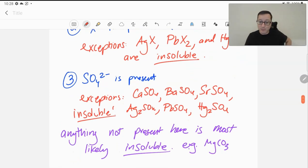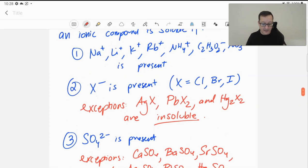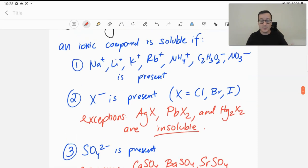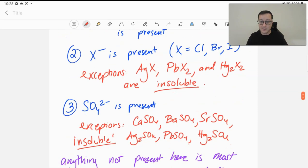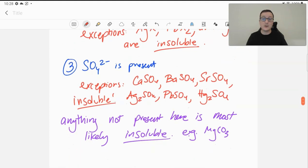Anything that's not present here is most likely insoluble. For example, if you see magnesium carbonate, we have no idea. It's not covered by any of these. It's not anything from rule 1, we don't have any of those ions, we don't have a halide, and we don't have sulfate. So it's going to be insoluble.